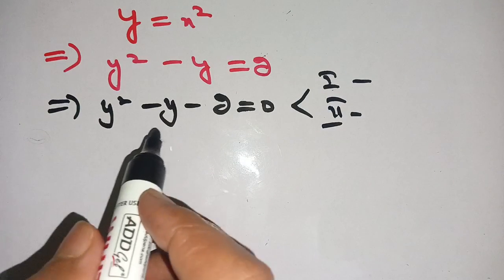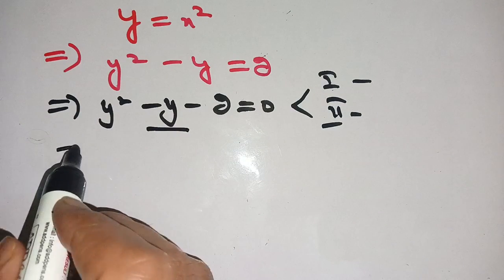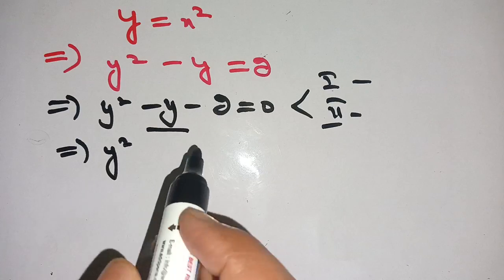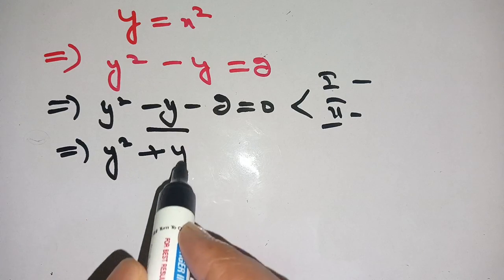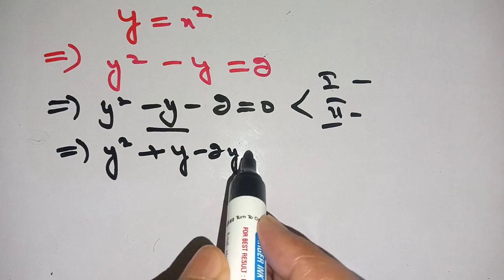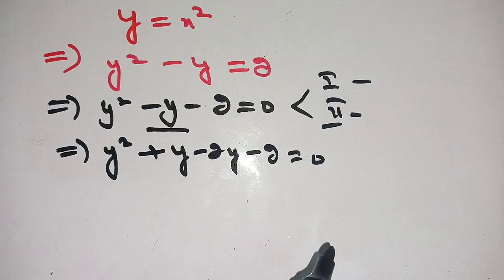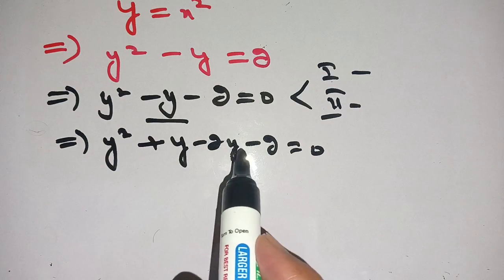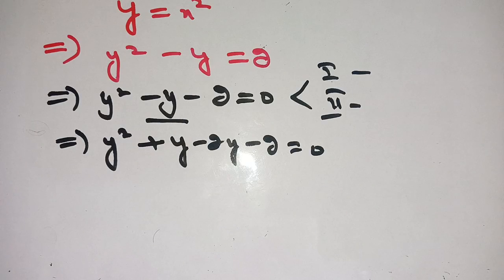Let us suppose that we break the middle terms in such a way that is y square plus y minus 2y minus 2 is equal to 0, because y plus y minus 2y becomes minus y.